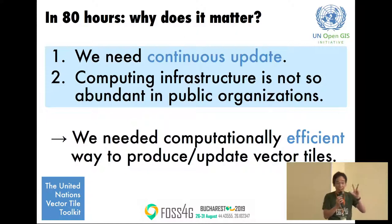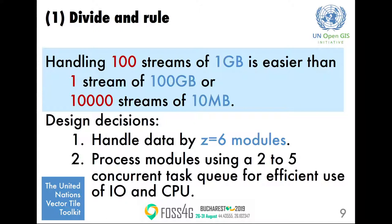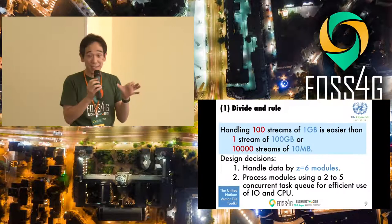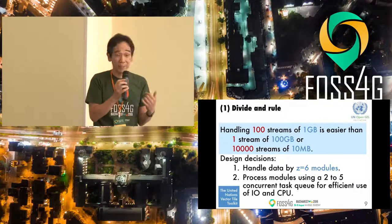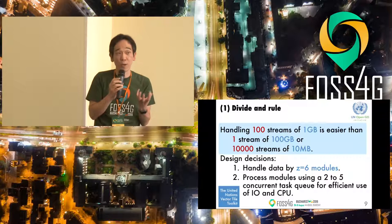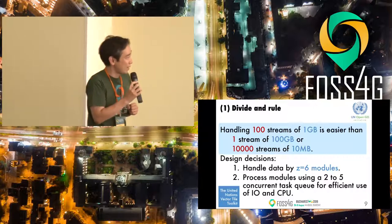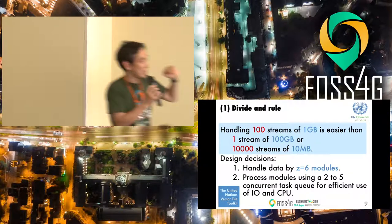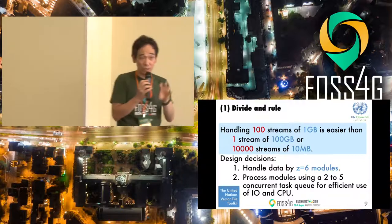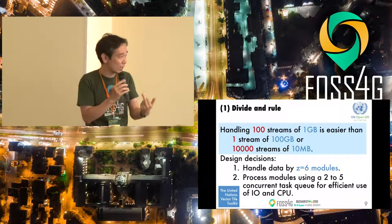I would like to share three measures to make the 80-hour update possible. The first is a classic one: divide and rule the dataset. The main dataset is around 50 gigabytes, but handling 100 streams of one gigabyte is very easy with current-generation computers. We chose the Zoom Level 6 module as the basic unit to produce vector tiles, so we can produce these modules in parallel or in a concurrent manner, making efficient use of I/O and CPU resources.